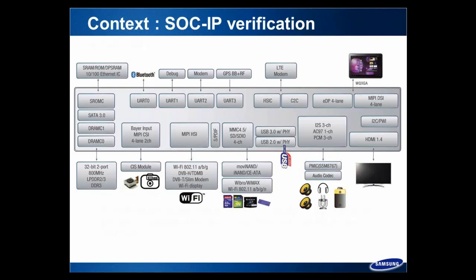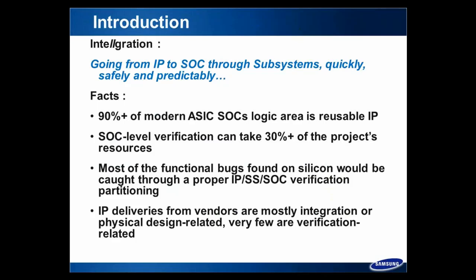As an introduction, this presentation is about how to go from IP to software through subsystem in a quick, safe, and predictable way. Mark has covered part of the introduction already. A very significant part of modern ASICs is from reusable IPs. Verification resources can take 30% or more depending on whether you include back-end or front-end, depending on the organization, but we all agree it's a very significant part of overall verification resources.